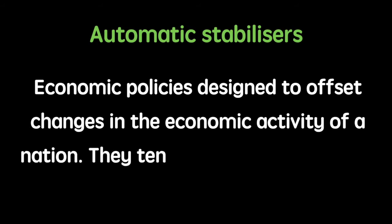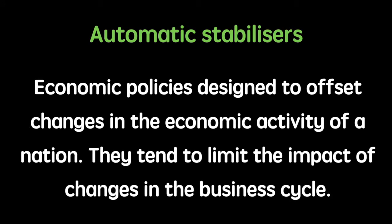Discretionary policy is held in contrast to automatic stabilizers. These are economic policies designed to offset changes in the economic activity of a nation and tend to limit the impact of changes in the business cycle. For example, a progressive tax system will collect more in tax when the economy is expanding and will reduce excessive spending as people earn more money. On the other side, government spending on benefits will increase as the economy slows down and people lose their jobs. Automatic stabilizers are built into government policy and automatically kick in as economic activity fluctuates.